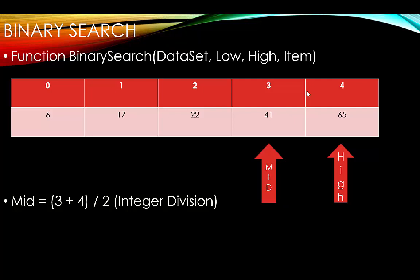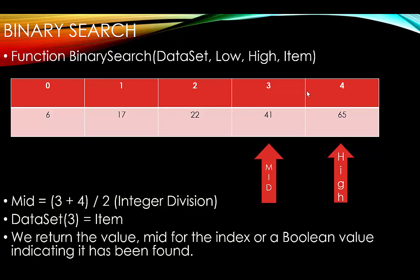Now we have mid equal to 3. Data set index 3 equals 41, which is the item we're looking for. We return the value mid as the index where it was found — or a Boolean value indicating it was found — depending on how we want to program the function.